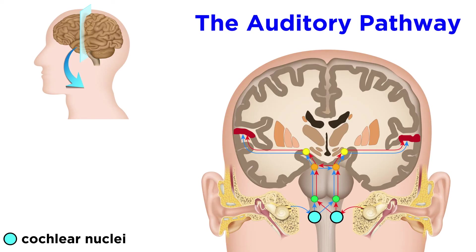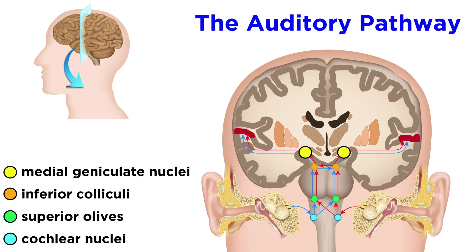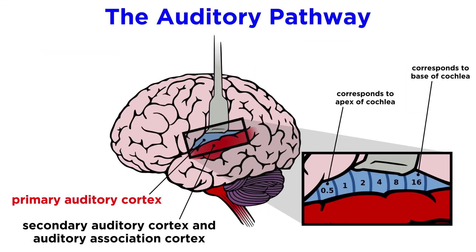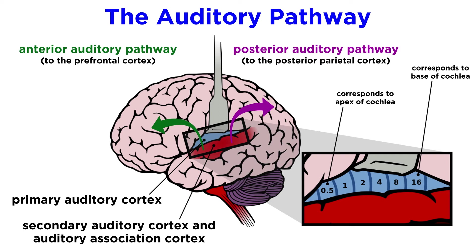This signal travels to the cochlear nuclei, then to the superior olives, then the inferior colliculi, and then the medial geniculate nuclei of the thalamus. From here, information heads to the primary auditory cortex, secondary auditory cortex, and auditory association cortex. Just like the dorsal and ventral streams for visual processing, there seems to be an anterior auditory pathway leading to the prefrontal cortex, and a posterior auditory pathway leading to the posterior parietal cortex.